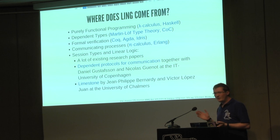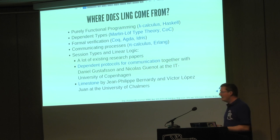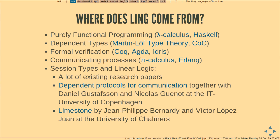Where does this language come from? I took inspiration from many languages — from purely functional, strongly typed languages such as Haskell, and theories such as Martin-Löf type theory and calculus of constructions. I also drew from fully developed proof languages such as Coq, Agda, and Idris. The process part inherits from the Pi-Calculus, for which we might know better as Erlang. And there's more precisely all the research on session types and linear logic, inspiring work developed by me and colleagues at IT Copenhagen and Chalmers in Sweden.